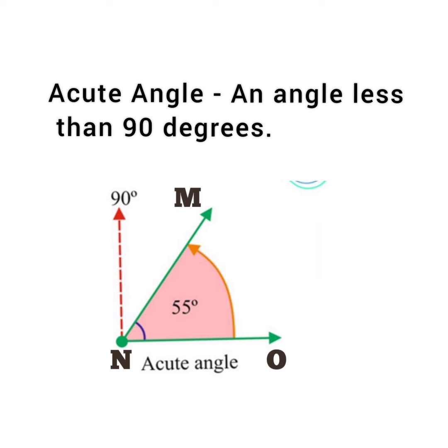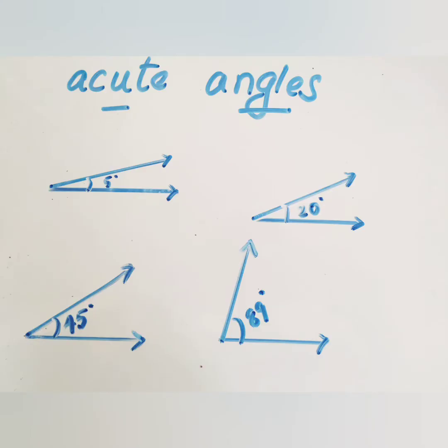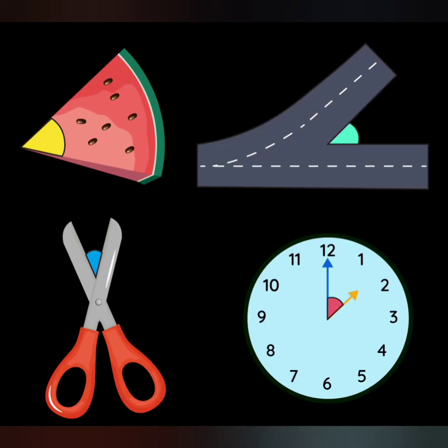An angle which is less than a right angle is called an acute angle. That is, an angle which is less than 90 degrees. That means it can be from 1 to 89. Few examples of acute angles.